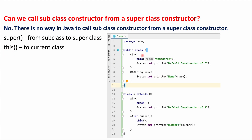In this example, we have a class C and we have created a subclass A from C. Class C has two constructors and class A has two constructors. Here we are using the this method to call the current class constructor, and here we are using the super method to call the superclass C constructor.